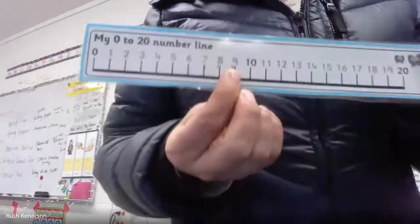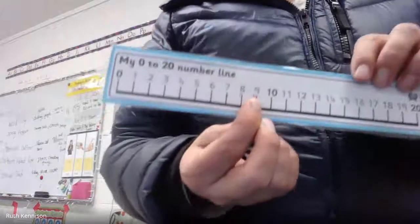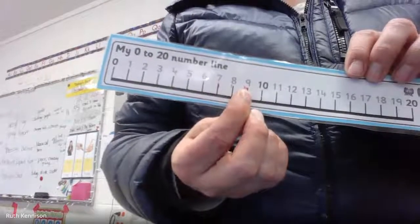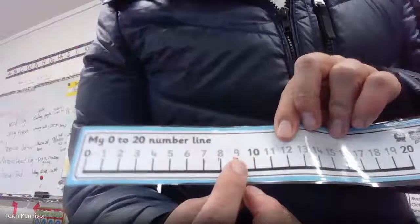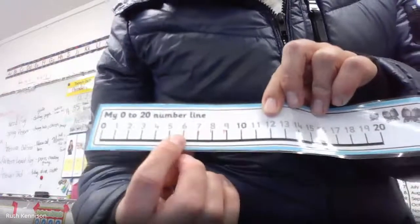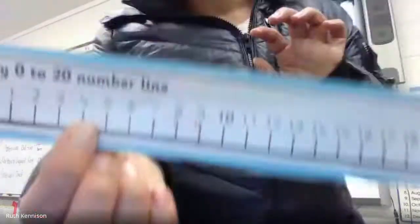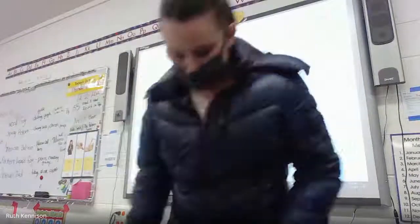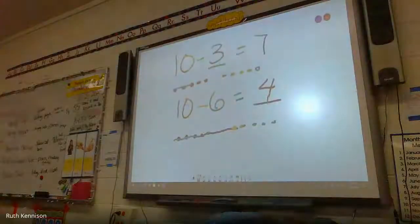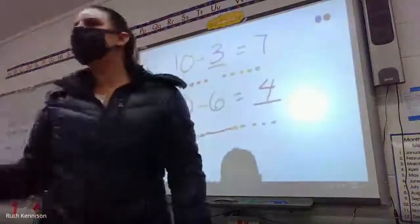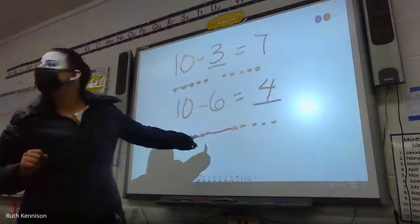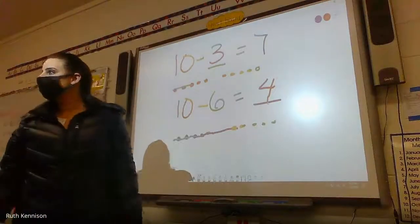We could go ten. Please stop. And we're going to count backwards six. One, two, three, four, five, six. And we landed on four. Same answer. Multiple strategies. Right now we're practicing this math drawing strategy.